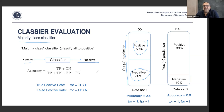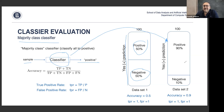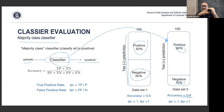If we predict everything is positive on the 90/10 dataset, we'll be right in 90 cases and wrong in 10 — giving an accuracy of 90%. It's the same algorithm on different data sets, and the only difference is the ratio of positives to negatives. This is very strange — it shows very different accuracy numbers for the same dumb classifier.